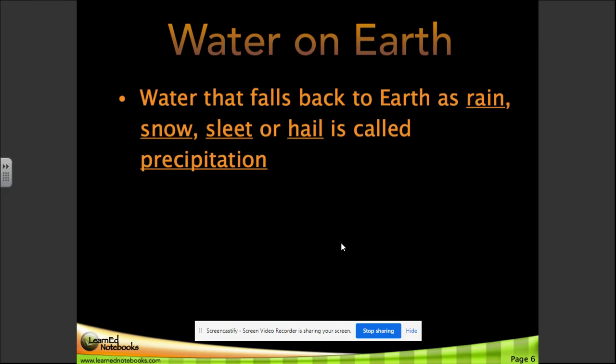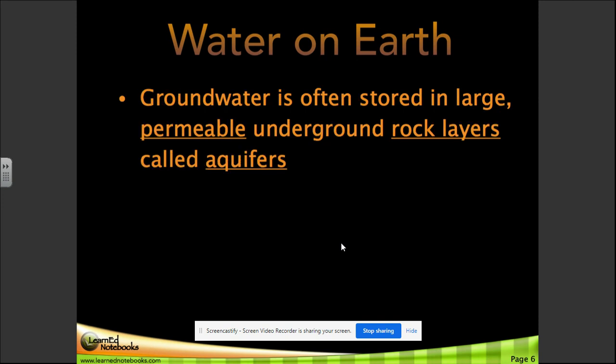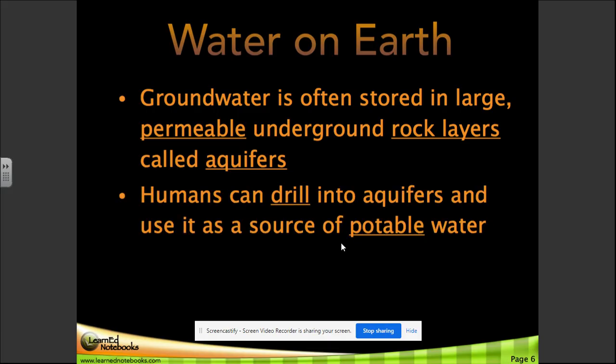Water that falls back to Earth as rain, snow, sleet, or hail is called precipitation. Precipitation that filters through the soil becomes groundwater. Groundwater is often stored in large, permeable underground rock layers called aquifers. Humans can drill into aquifers and use it as a source of potable water.